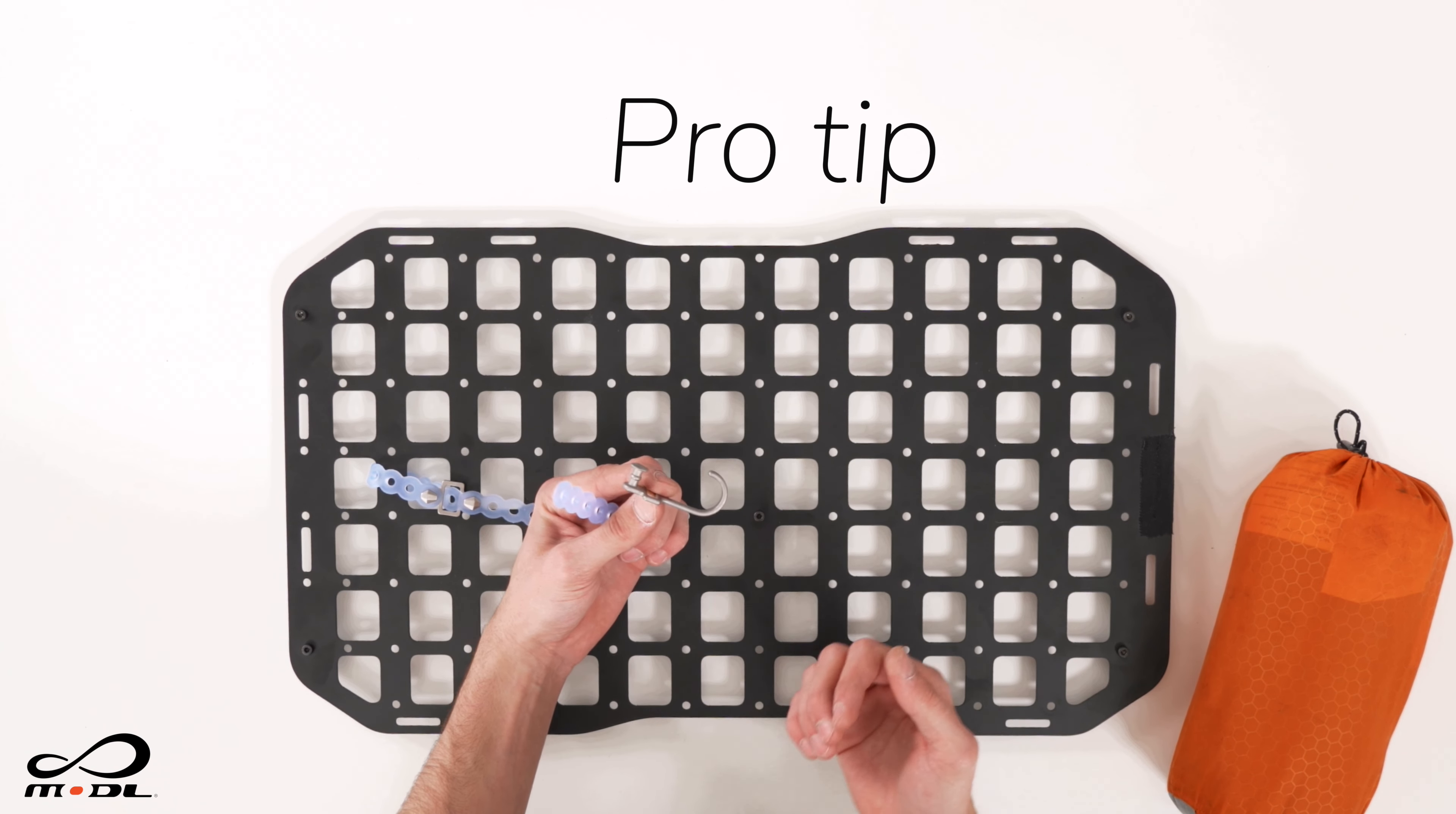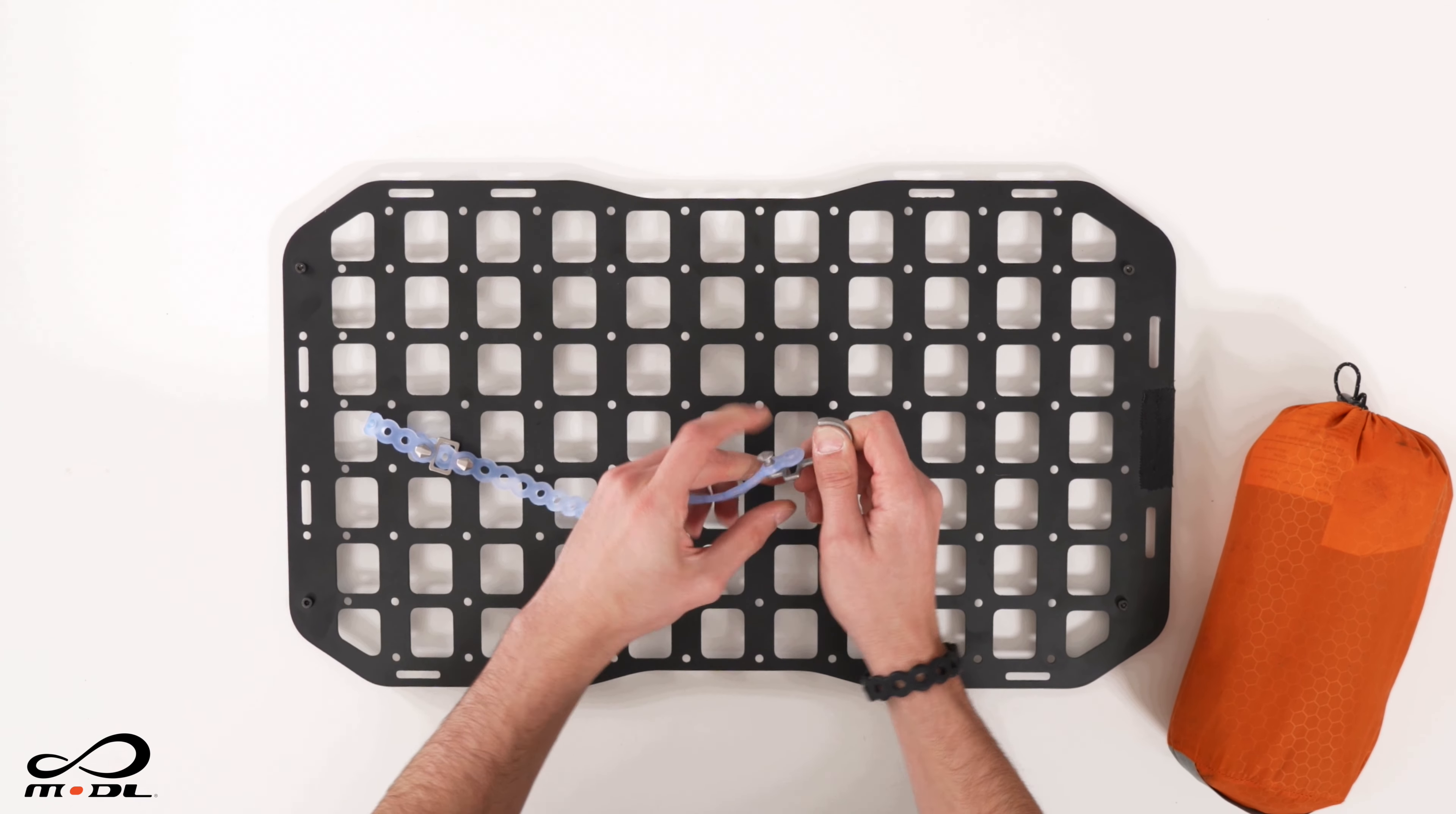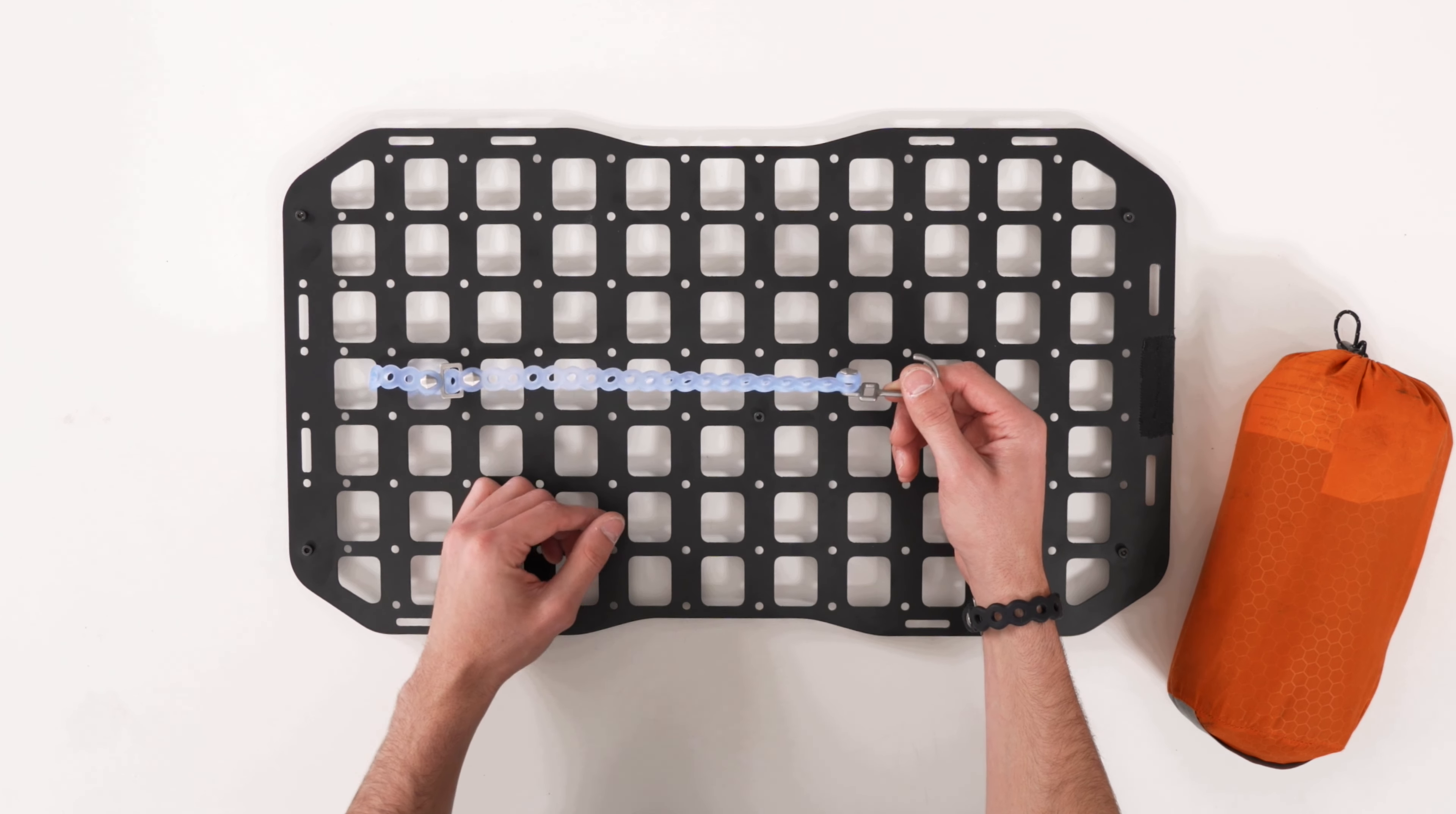Another pro tip is there's a stack connection point on the hook. What you can do here is you can actually fold the loop back on itself just so it holds it a little bit more securely.